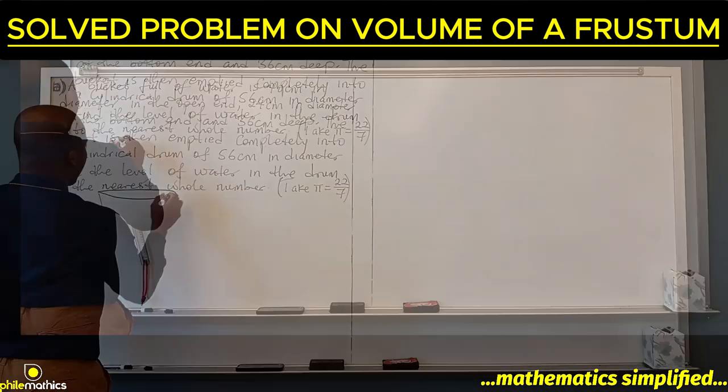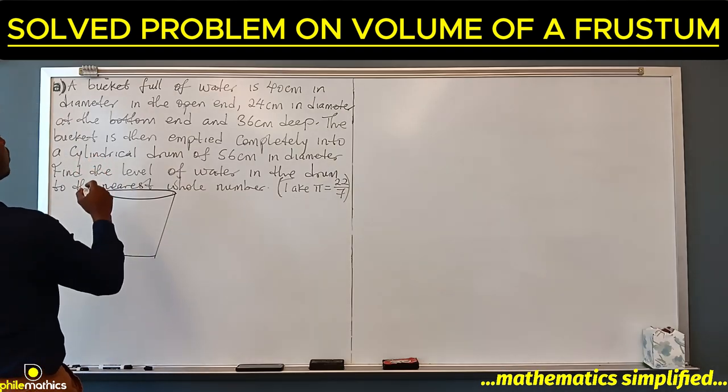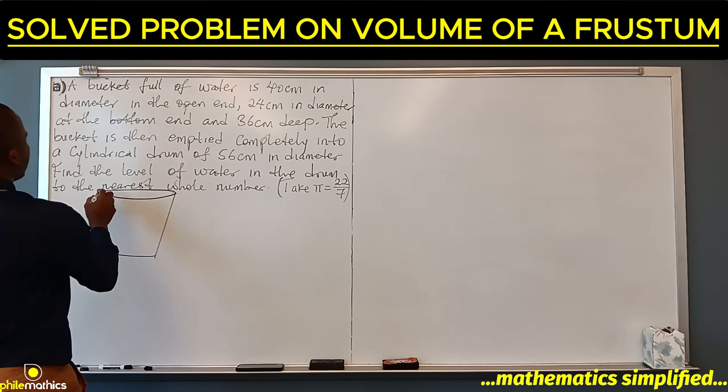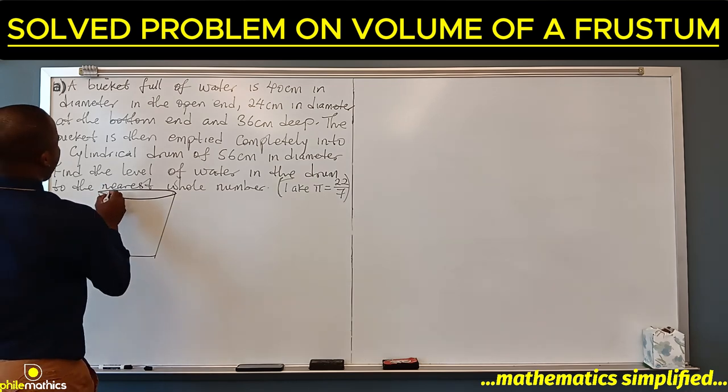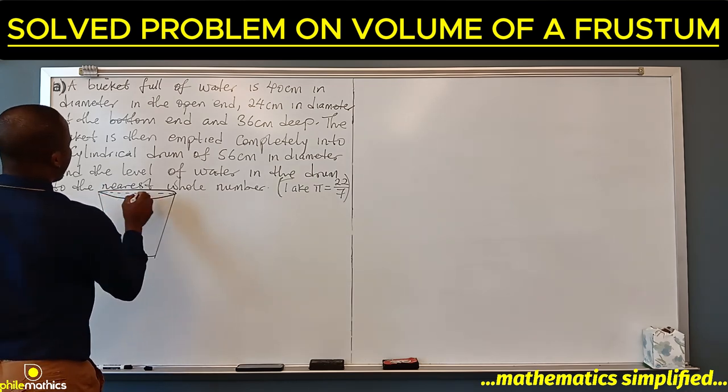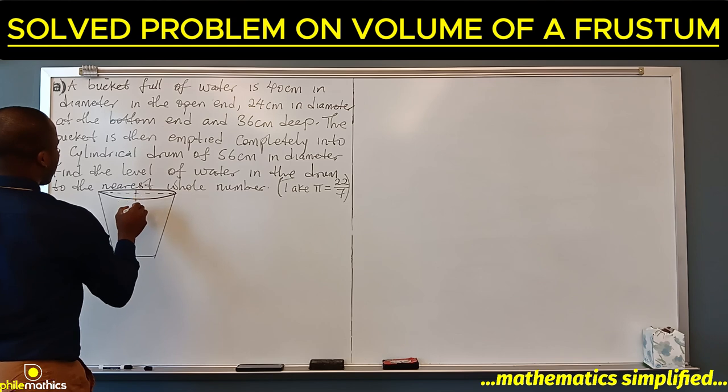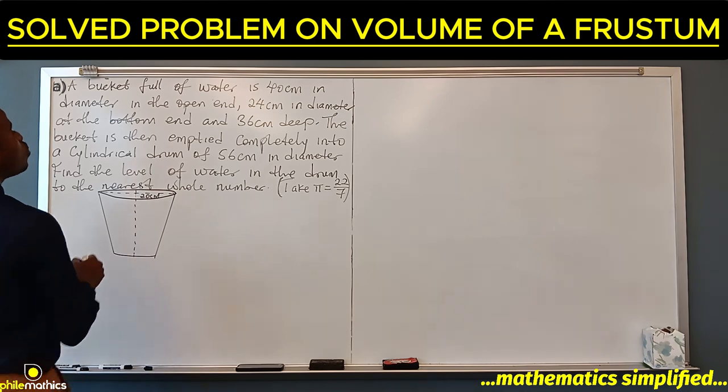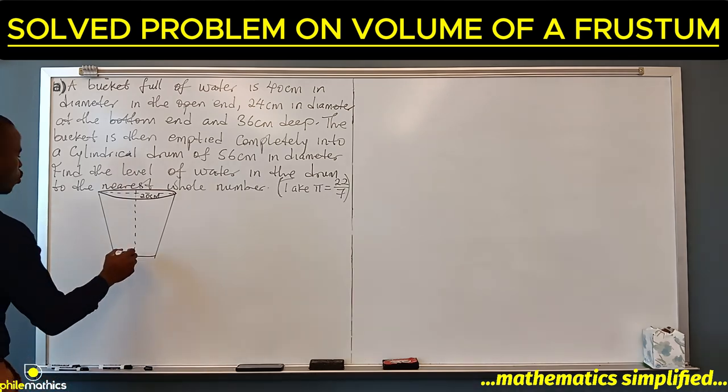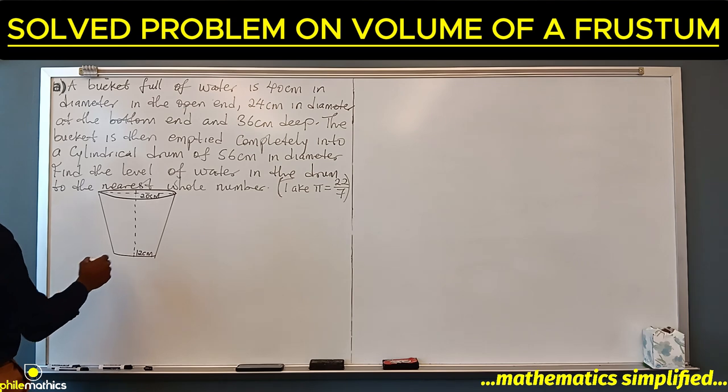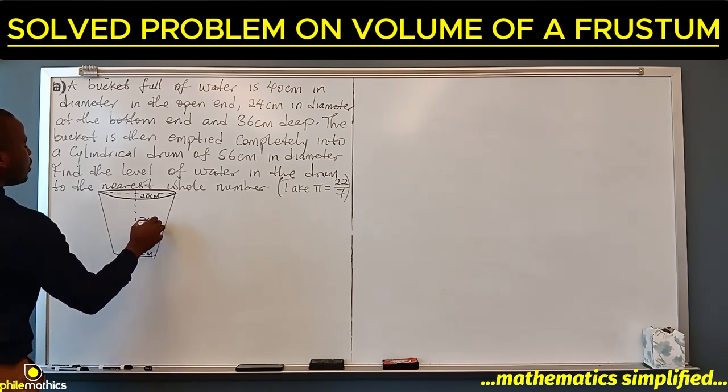So this is the bucket. It's 40 cm in diameter at the open end, so the radius is 20 cm, and 24 cm at the bottom, so the radius is 12 cm. The height is 36 cm deep.